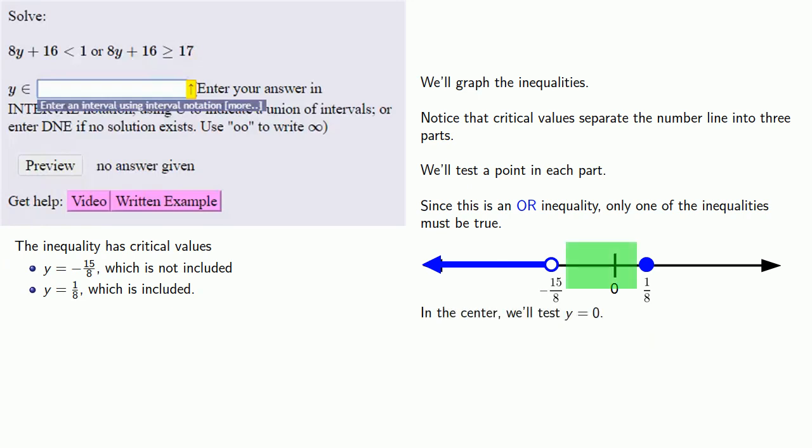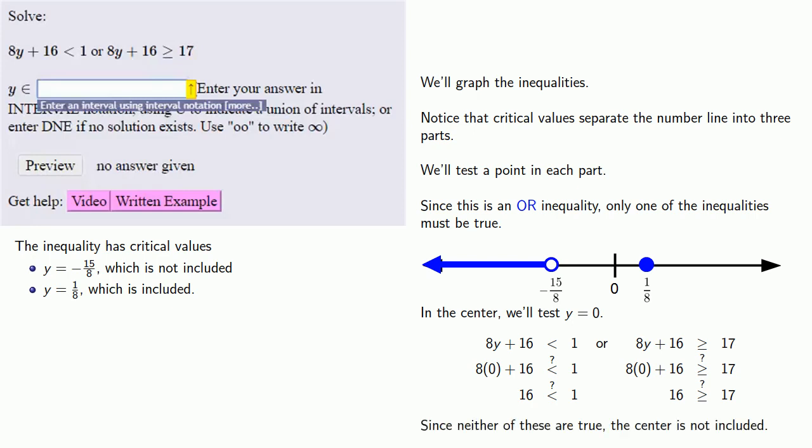In the center, we'll test y equals 0. We want to know whether our inequality 8y plus 16 less than 1 or 8y plus 16 greater than or equal to 17 is true for y equals 0. We'll check the first inequality. If y equals 0, we get 16 less than 1, which isn't true. But since this is an OR inequality, only one of the inequalities must be true. Maybe the other inequality will be true. We let y equals 0 in the second inequality, and again, this is not true. Since neither of these are true, the center is not included.